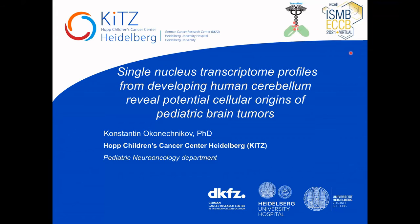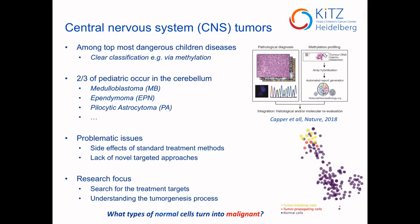First, it's important to note the significance of this investigation, since unfortunately the central nervous system tumors remain among the most dangerous children's diseases, and there are still no clear, fully appropriate treatments available for them. Even though through the past decades there were some improvements in the classification of such tumor types, using most importantly techniques such as methylation that allowed to clearly distinguish between groups of these tumors, there are still remaining unanswered questions.